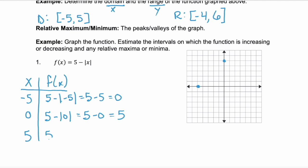And lastly, 5 minus the absolute value of 5 is 5 minus 5, which again is 0. So this is the point positive 5, 0. Now if we connect these three dots, we can see what this function looks like. And I'm going to put arrows at the ends, because we know that the function continues on in both directions.